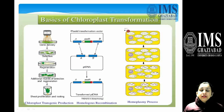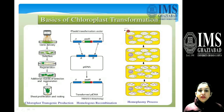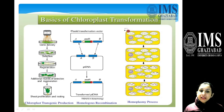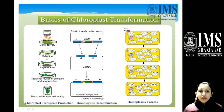This is a flow diagram of chloroplast transformation, which is the basic technique of genetic engineering. Gene delivery is done first, then selection, then regeneration, then another round of selection is done, and finally the shoot is regenerated.